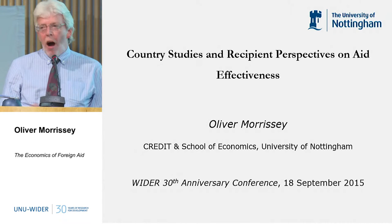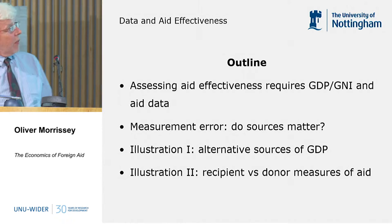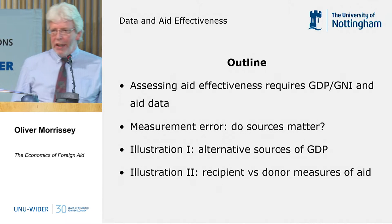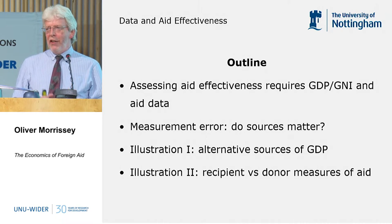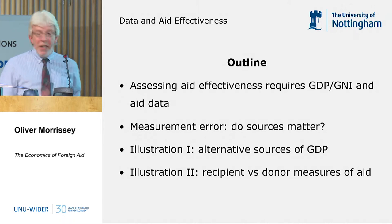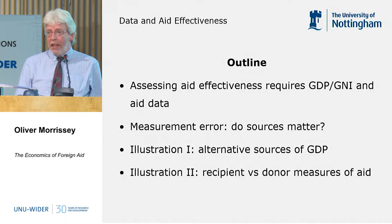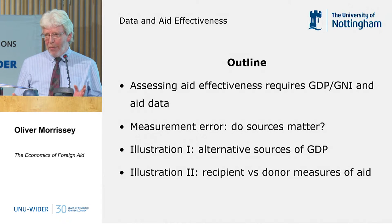I view that as a complement to the kind of cross-country studies. The basic principle I'm going to have here is that if you want to do aid effectiveness studies, there are two fundamental pieces of data you need. You need a measure of GDP or GNI — a measure of national income — and you need a measure of aid. We know both of these are measured with error, so the data we have available is subject to measurement error.